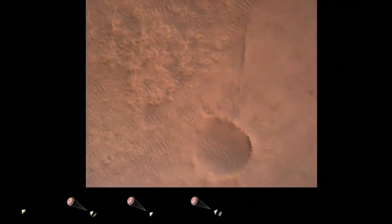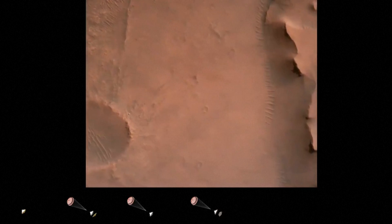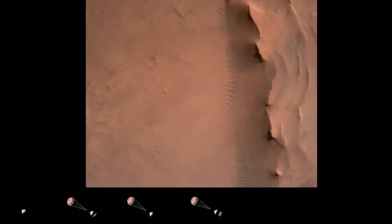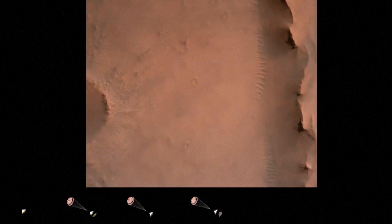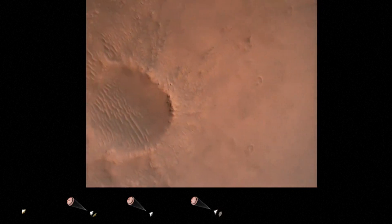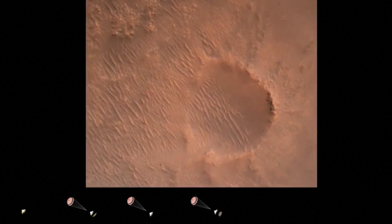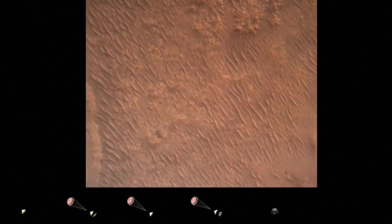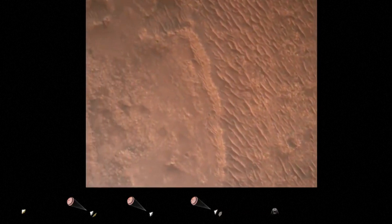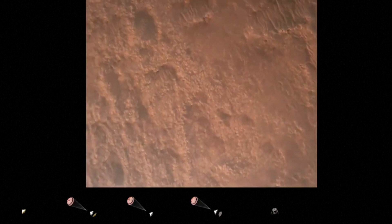Back shell separated. Current velocity is 83 meters per second at about 2.6 kilometers from the surface of Mars. We have confirmation that the back shell has separated. We are currently performing the divert maneuver. Current velocity is about 75 meters per second at an altitude of about a kilometer off the surface of Mars.